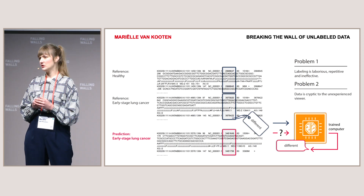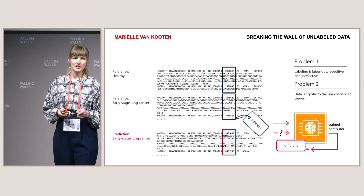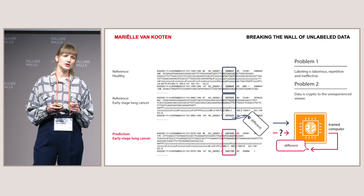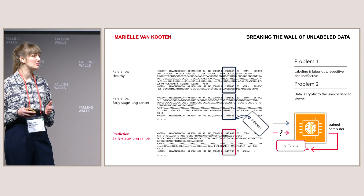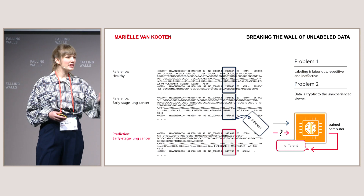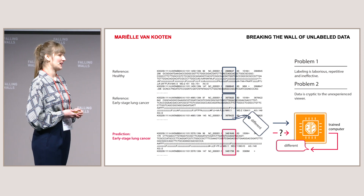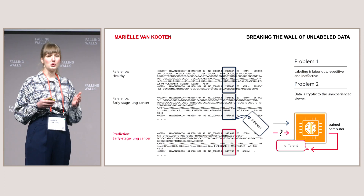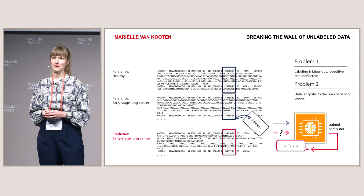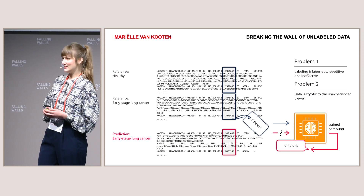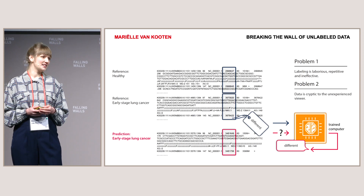We can find these clues with the computer. First, you have to tell the computer what to look for, and for that you need reference data that is labeled. Just think about it — you know what a giraffe looks like because someone told you a couple of times. The computer needs a whole lot more giraffes to get that point, and that's a problem. For a given scientist, labeling is laborious and repetitive.